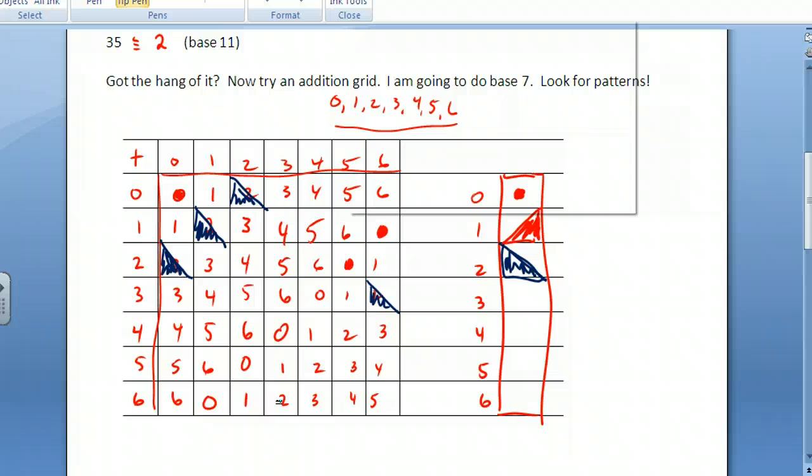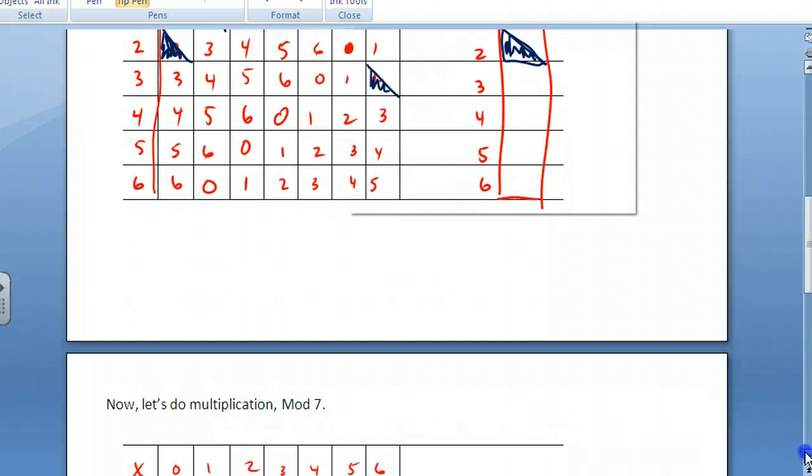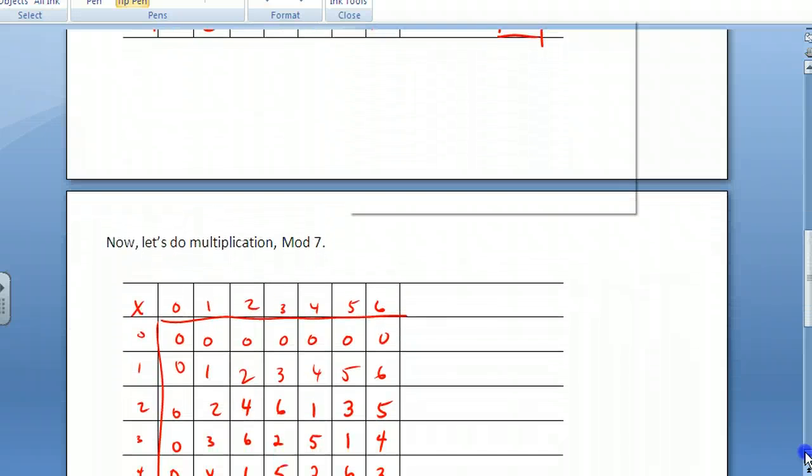You do exactly the same thing for the multiplication. What should happen is that you get much different patterns just because the numbers are way different. So you fill that out. Another thing is that, and you should do a grid by hand. So your assignment is to do a multiplication and addition table in a certain mod. You can pick which mod you want.